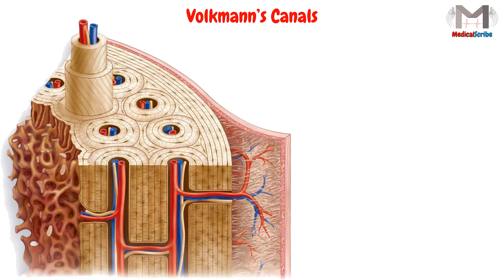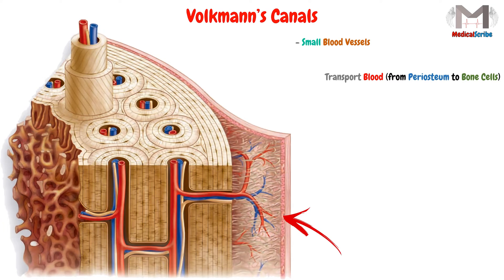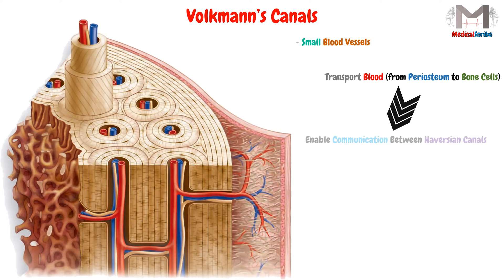These canals contain small blood vessels that transport blood from the periosteum to the bone cells, and they also enable communication between the Haversian canals, so that they are not isolated from each other.